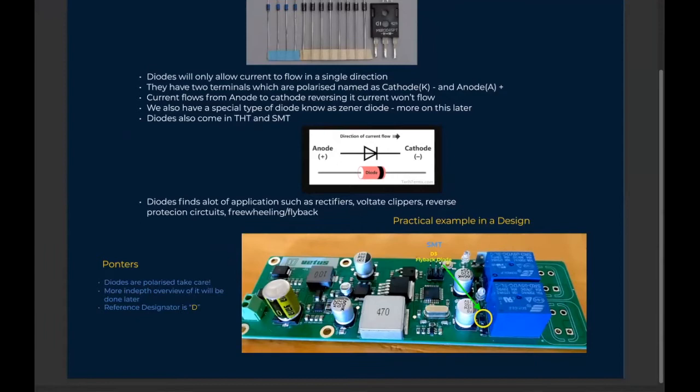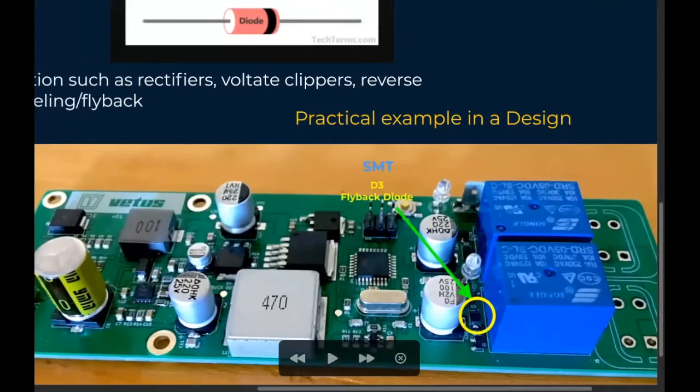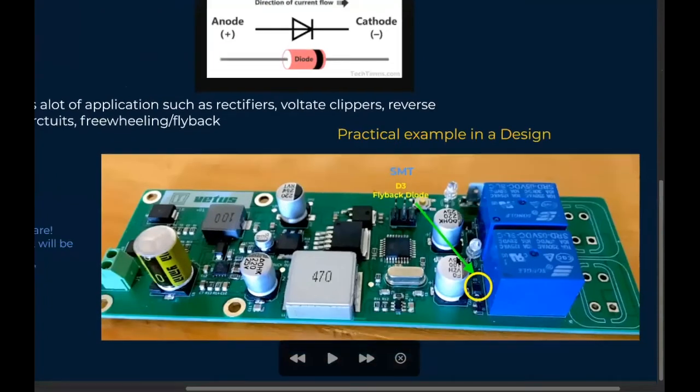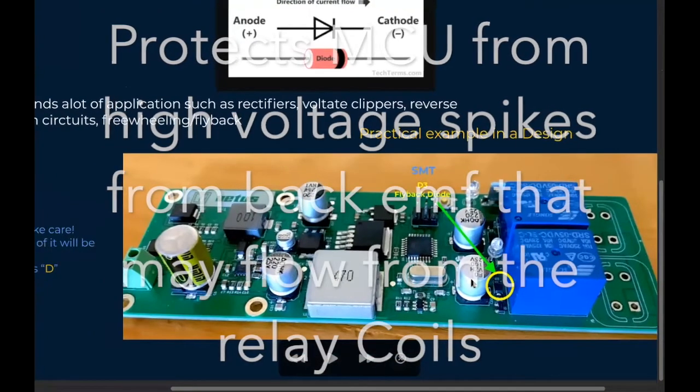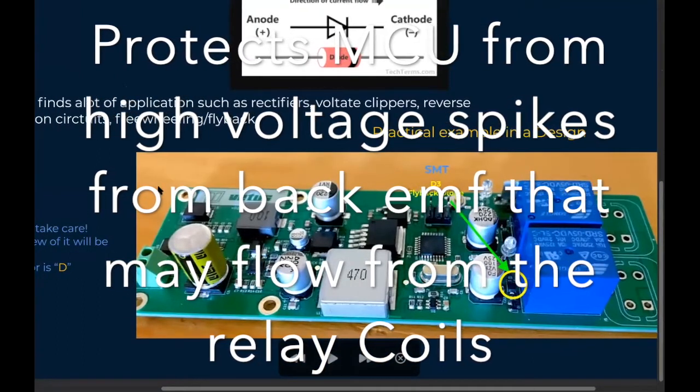Reverse protection, as you've known, it will only allow current to flow in one direction. And they are used as freewheeling diodes. An example here in this diagram, I've used a diode here as a freewheeling diode or a flyback diode. So its main function is to block power from flowing back into the MCUs or what's actually switching them.